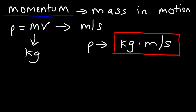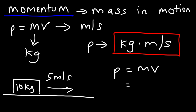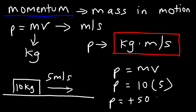Now let's work on an example problem. We have a 10 kilogram block sliding along a horizontal frictionless surface at a speed of 5 meters per second east. The speed is 5 meters per second, but the velocity is 5 meters per second east. What is the momentum of the block? Momentum is mass times velocity: 10 kilograms times 5 meters per second east, giving us positive 50 kilograms times meters per second.